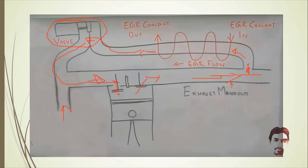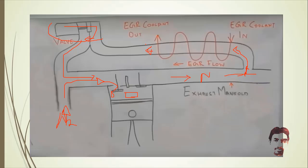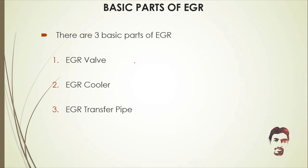In the next cycle, when the recirculated gas mixes with the cooler exhaust gas, combustion happens at a slightly lower temperature. This reduces the chance of NOx creation. The EGR cooler cools the exhaust gas before it re-enters the engine.